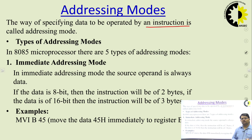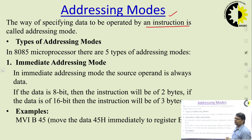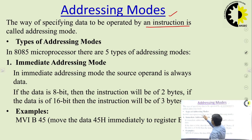Data over which operation is to be performed may be specified through a register, or its address may be specified through a register, or the data may be available in the accumulator itself. There are different ways of specifying the data or operand in the instruction, and these different ways are known as addressing modes. Here we will discuss some important types of addressing modes of the 8085.